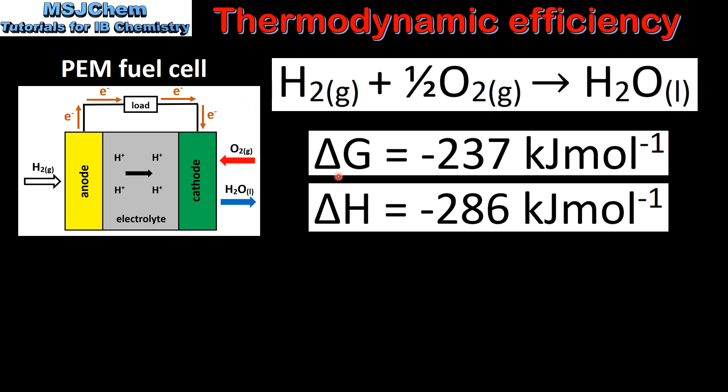The change in Gibbs free energy for this reaction is negative 237 kilojoules per mole. The change in enthalpy for this reaction is negative 286 kilojoules per mole.